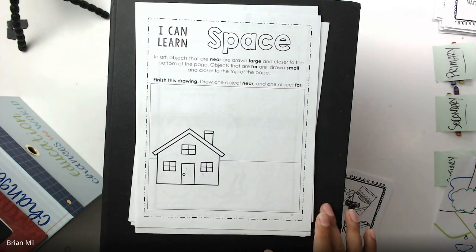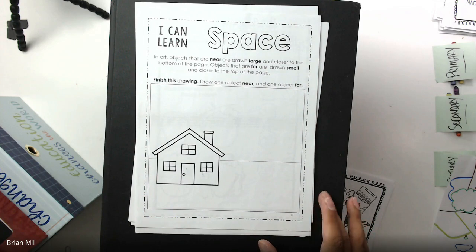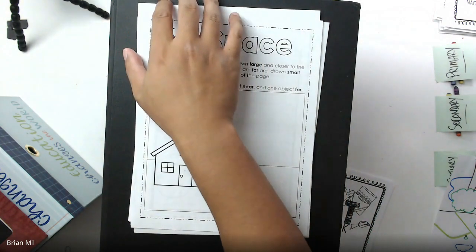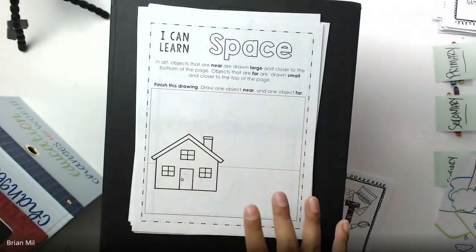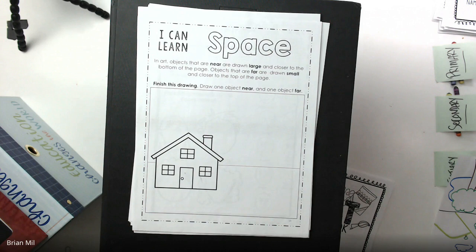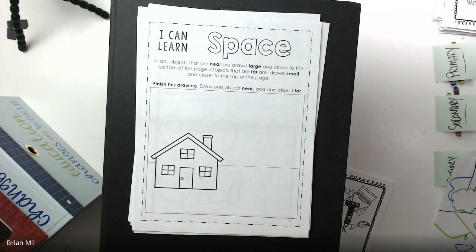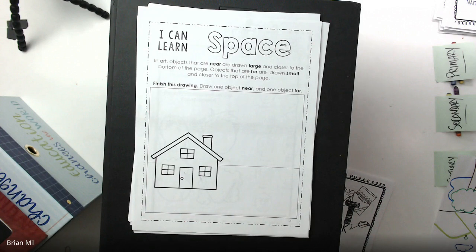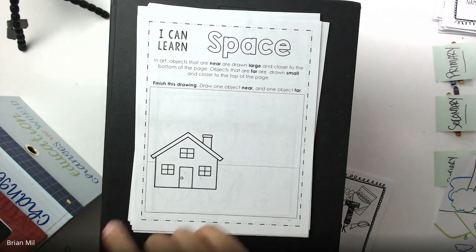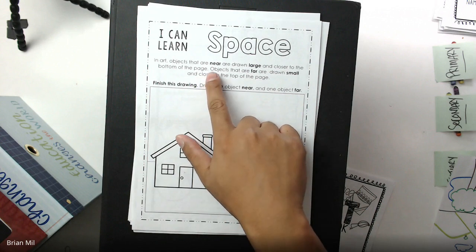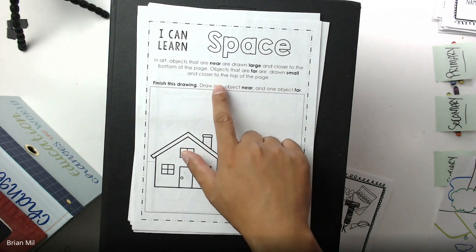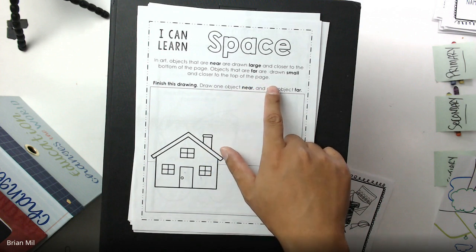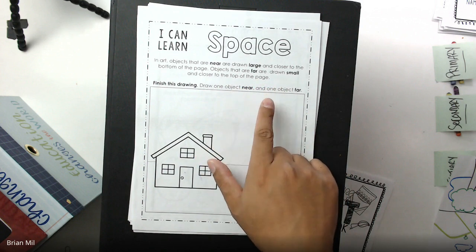So I want to talk about the element of art, which is space. It refers to an image or a picture. It's basically referring to the whole thing and how it's laid out. And that's all I'll say for first grade. Let's read what it says on top. Please make sure you're paying very close attention because I'm going to ask two questions afterwards. In art, objects that are near are drawn large and closer to the bottom of the page. Objects that are far are drawn small and closer to the top of the page.